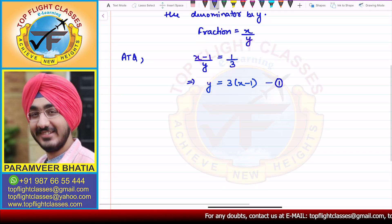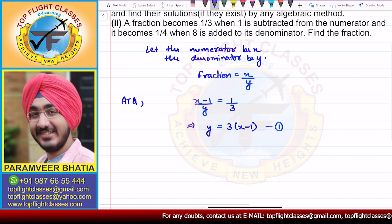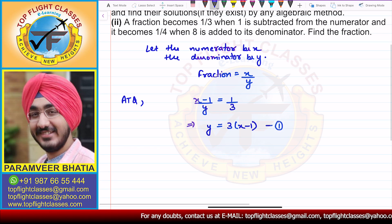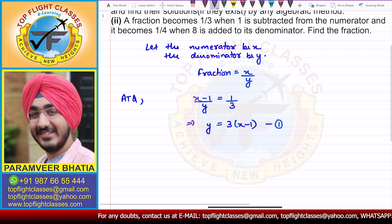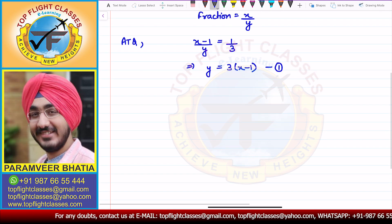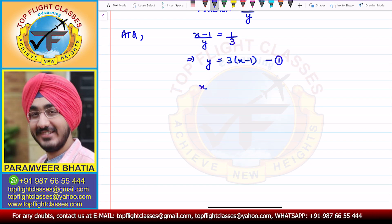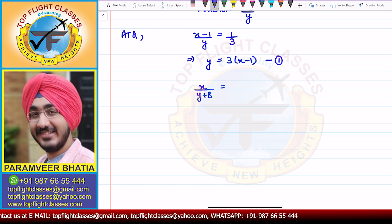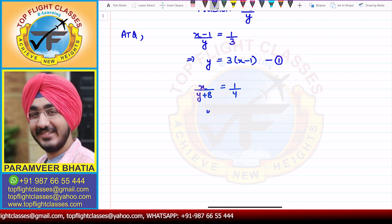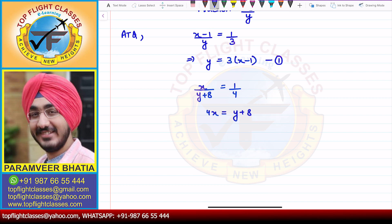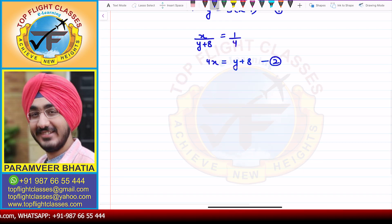For the second equation, if eight is added to the denominator then the fraction becomes one-fourth. So that means x divided by (y plus 8) is equal to one-fourth. From here we get that 4x is equal to y plus 8. This is the second equation.